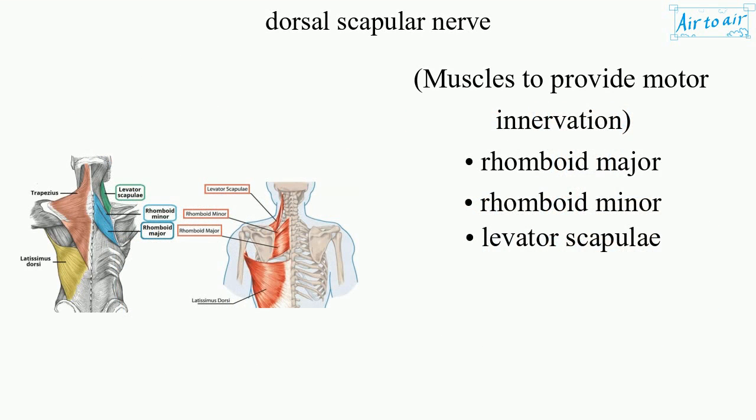Muscles receiving motor innervation: Rhomboid Major, Rhomboid Minor, and Levator Scapulae.